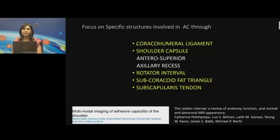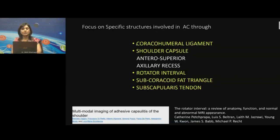After going over the basics, we come to the specific structures to evaluate on ultrasound in adhesive capsulitis, enumerated in order of high sensitivity and specificity on static imaging. First is the coracohumeral ligament. Then the shoulder capsule, which is anterior-superior and most commonly affected, then the axillary recess and rotator interval. The subcoracoid fat triangle, introduced by Mengiardi et al., showed that obliteration of the subcoracoid triangular fat pad — inferior to the coracohumeral ligament — has the highest specificity of almost 100%, but with a low sensitivity, as it is difficult to elicit.